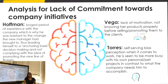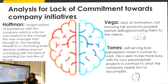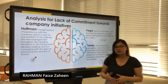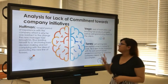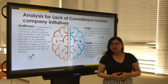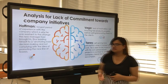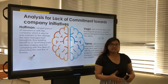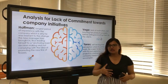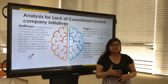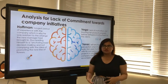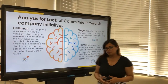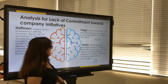Another problem analyzed from the case is lack of commitment towards company initiatives. We broke this down across three employees: Hoffman, Vega, and Torres. Hoffman had the longest experience in the company, which is why he was resistant to any new change in management. He had an anchoring bias in decision-making, which is why he didn't comply with promoting a new line of flowers in the market, leading to a downfall for the company.